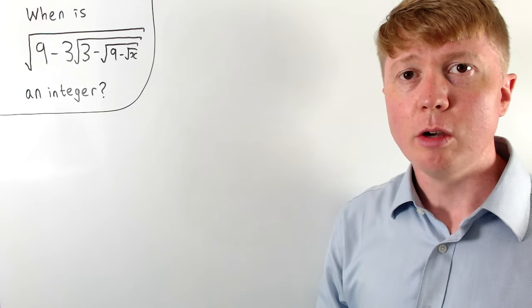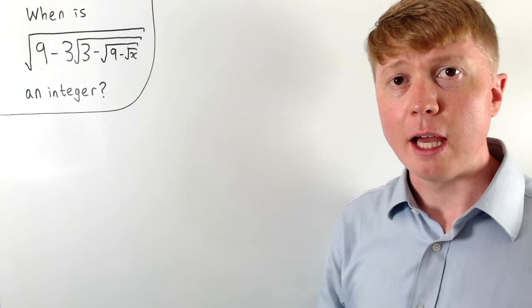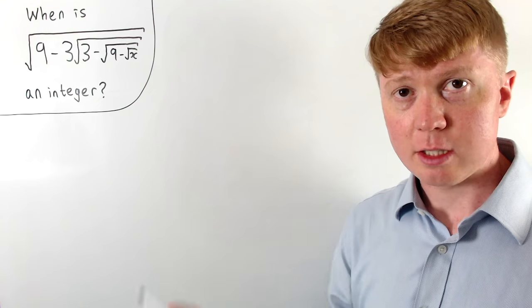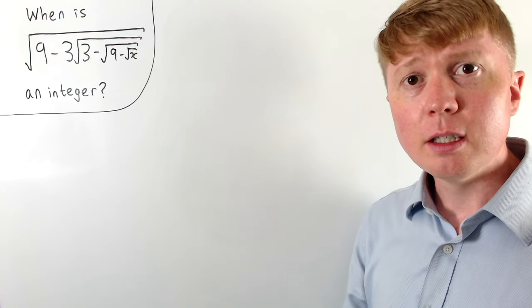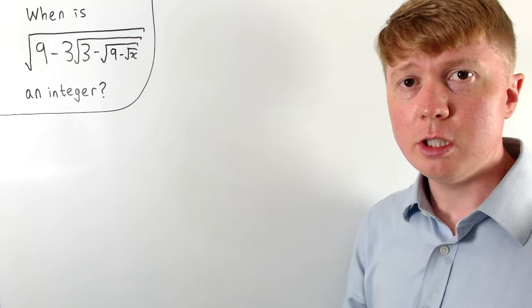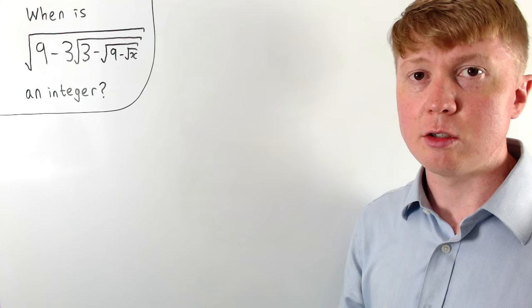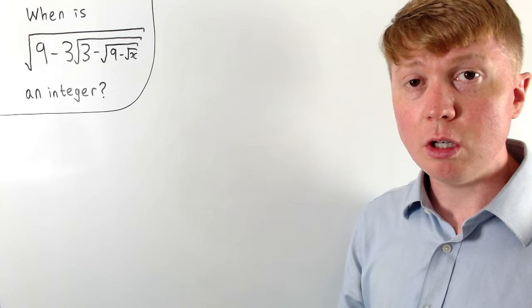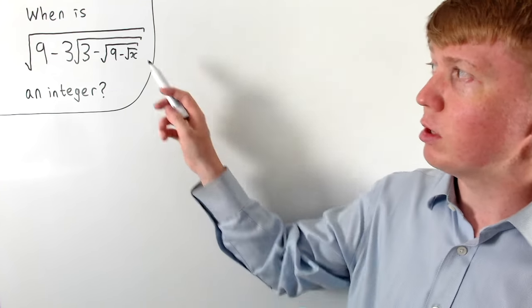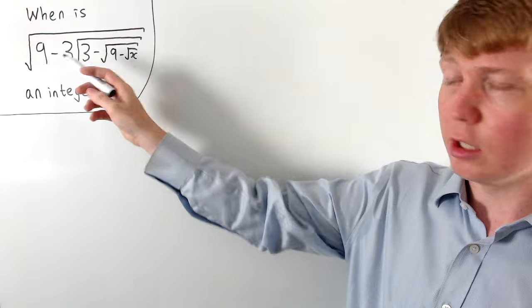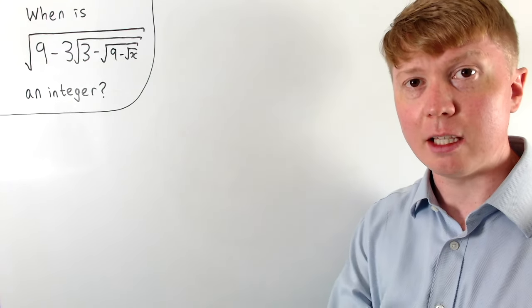We're going to solve this problem where we need to find all the real values of x for which this expression is an integer. To get started, we'll think carefully about which values of x are allowed, because we've got lots of different square roots, and we need to make sure that everything inside each of these square roots can't be negative.